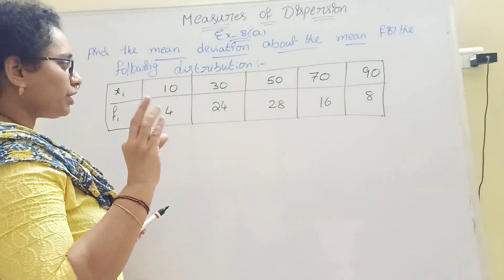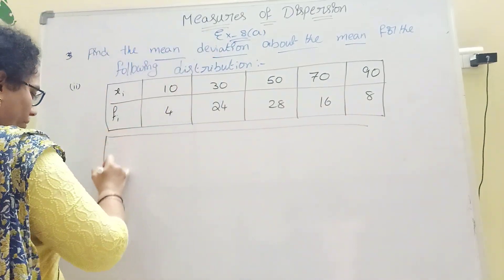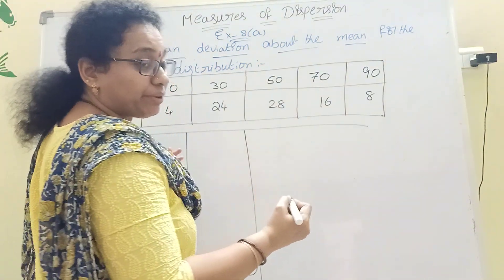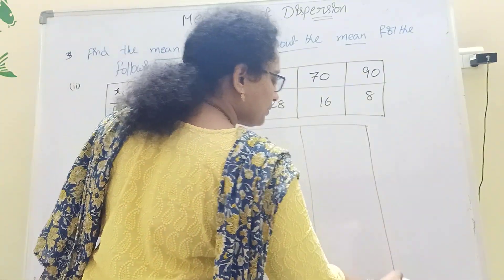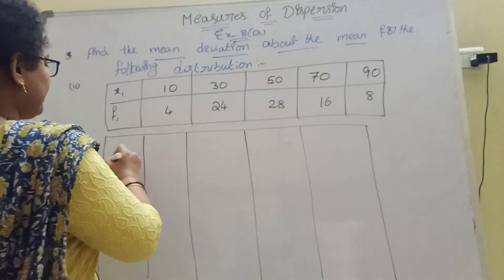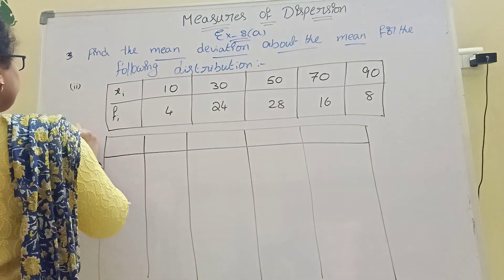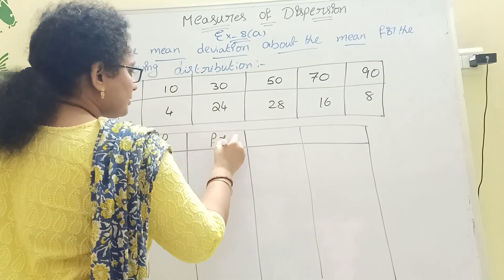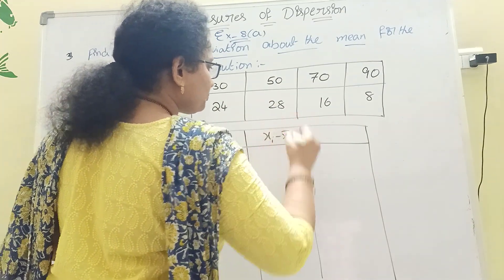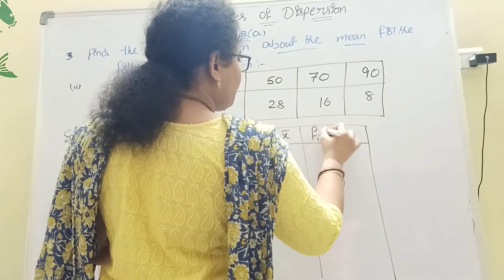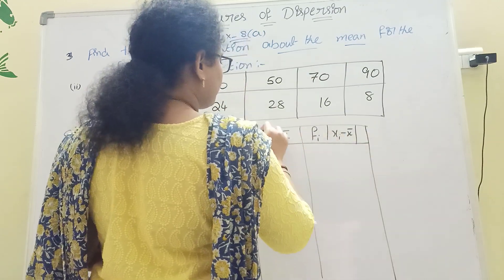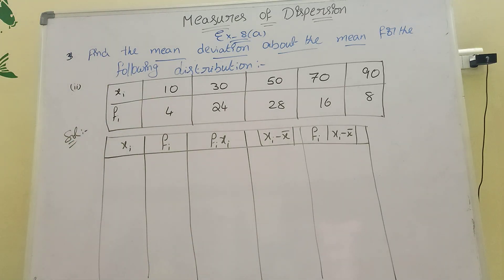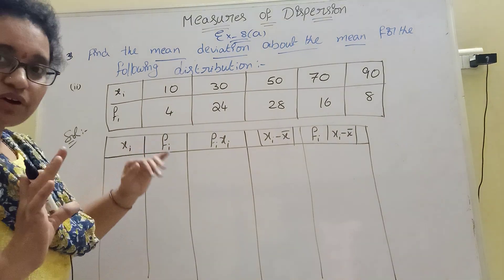For grouped data, 5 columns are required: xi, fi, fi·xi, |xi − X̄|, and fi·|xi − X̄|. These five columns are the requirements for solving this problem.